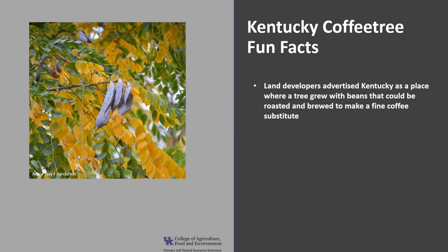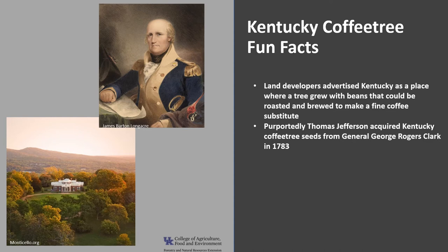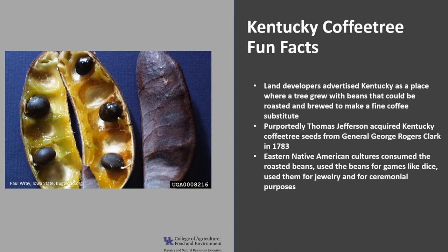Now for a few fun facts about Kentucky coffee tree. The name was promoted by early land developers who wanted to get settlers out to the far west, which included Kentucky at the time. Coffee was expensive and hard to find far away from coastal ports, so land developers advertised Kentucky as a place where a tree grew with beans that could be roasted and brewed to make a fine coffee substitute. Although drinkable, the beverage was no substitute for coffee, and early settlers quickly dropped it as soon as the real thing became available. It's been said that Thomas Jefferson acquired Kentucky coffee tree seeds from General George Rogers Clark around 1783, which he then planted at Monticello. Several Eastern Native American cultures consumed the beans after roasting, and the beans were used for games like dice, jewelry, and ceremonial purposes.